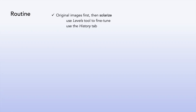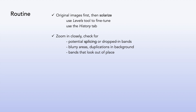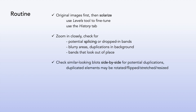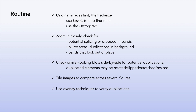Summing up — when screening blots, try the following routine. Look at the original figures first, then solarize the images in Photoshop; you can use the Levels tool to fine-tune and the History tab to return to the original view if necessary. Zoom in closely and check each panel for hard edges and potential traces of splicing or dropped-in bands. Blurry patches might point to inappropriate data alteration. Duplicated areas in the background suggest cloning and should always be flagged. Also check whether any of the bands look like they don't belong. Compare similar-looking blots to look for potential duplicates, and remember that these may be rotated, flipped, stretched or resized. Tile the images and look for whole panels or individual bands that might repeat across the figures. Duplications can be verified by using overlay techniques. To help understand and clarify potential issues, raw data should be requested from the authors.